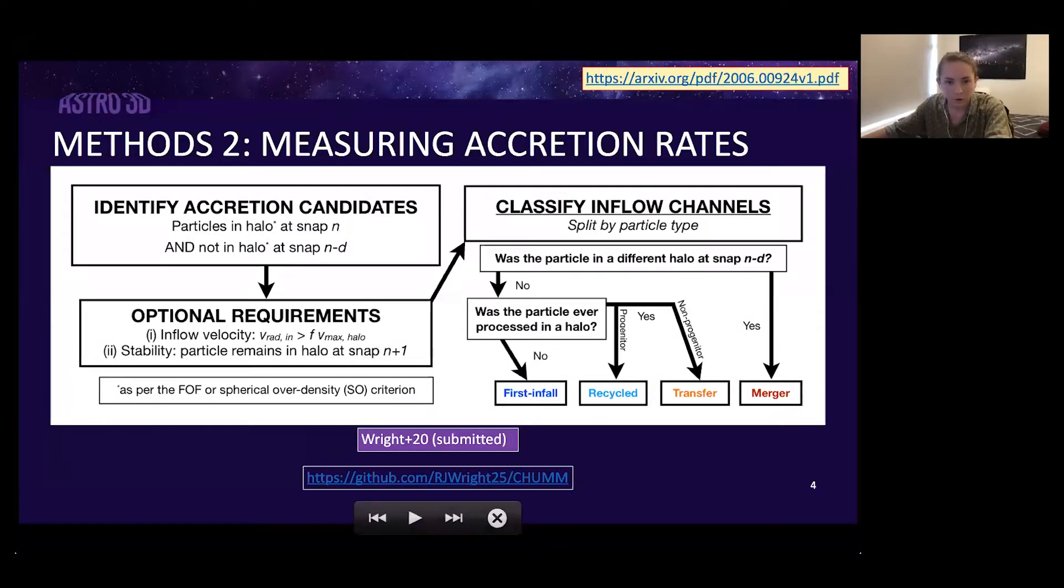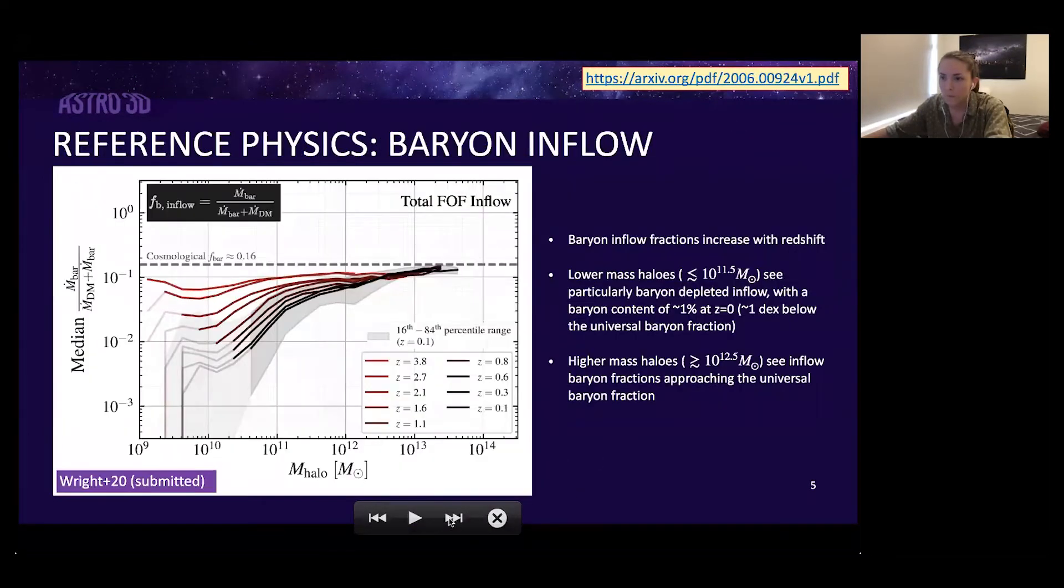So to start with, we'll concentrate on the reference or fiducial physics 50 megaparsec EAGLE run and then we'll move on to talk about the non-standard physics runs. Something that hasn't been explicitly explored much in the literature previously is comparing the rate of dark matter and baryon inflow directly.